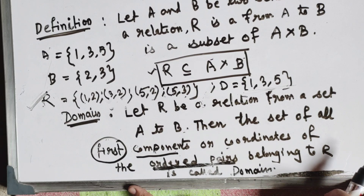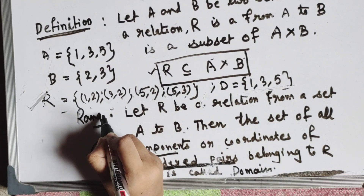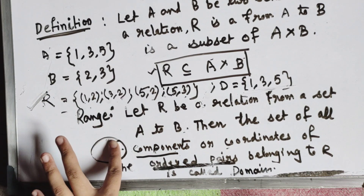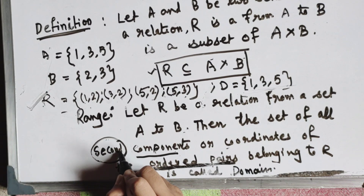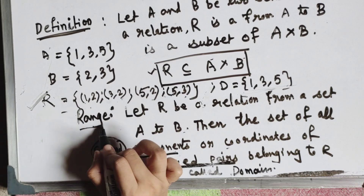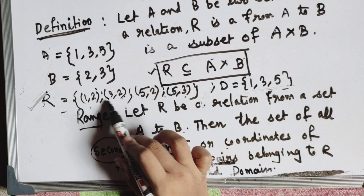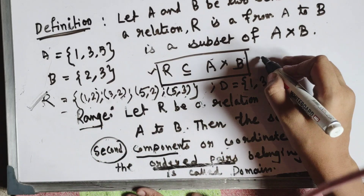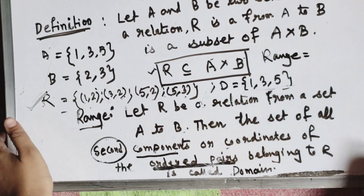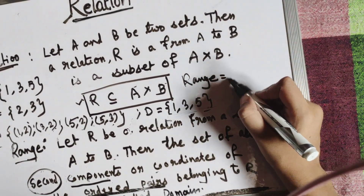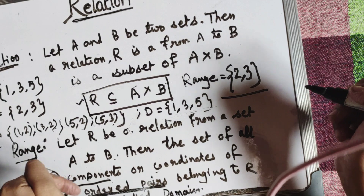Now what is range? In range, the keyword is 'second' — the second component of the ordered pair. The second components are: 2, 2, 2, and 3. Since 2 appears three times but we write it only once, the range = {2, 3}. That is the definition of range.